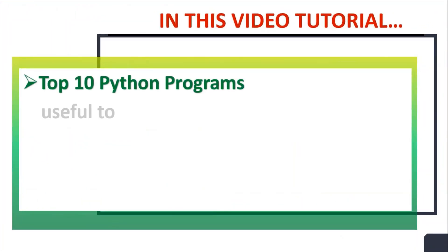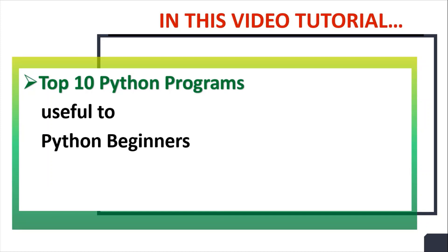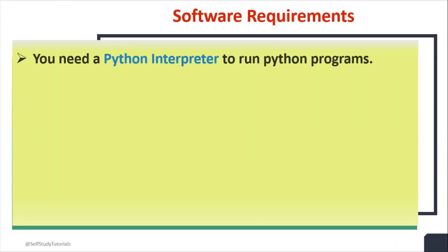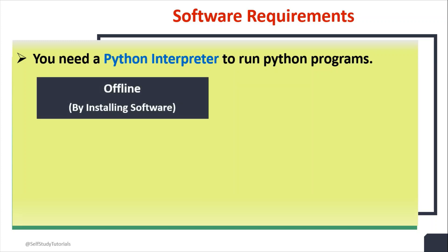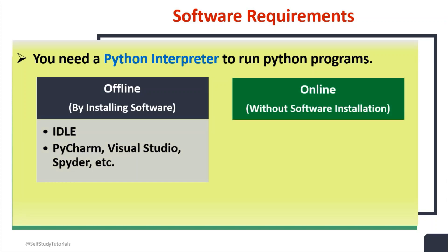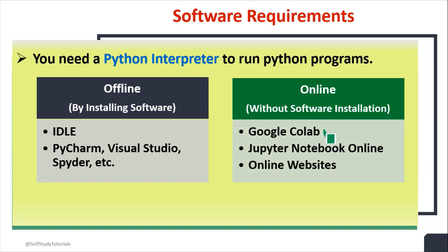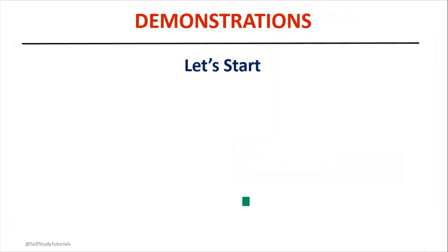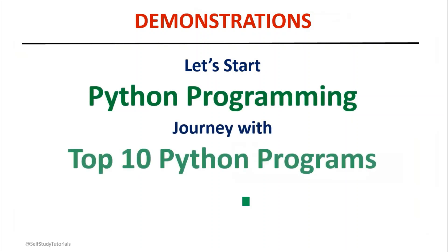In this video tutorial, we will discuss top 10 Python programs useful to Python beginners with practical demo sessions. This will help you to learn basic syntax of Python programming. You need a Python interpreter to run Python programs. This is possible in two modes: offline mode or online mode. You can install software on your computer or use an online tool. To learn how to use IDLE, Google Colab, or Jupyter Notebook, you can refer to links given in the description. Let's start the Python programming journey with top 10 Python programs.